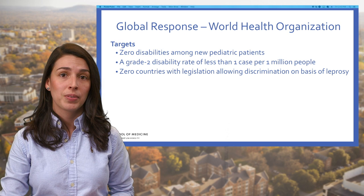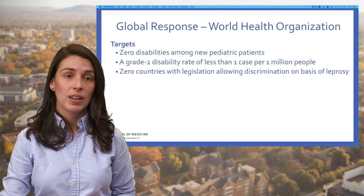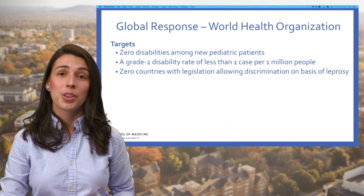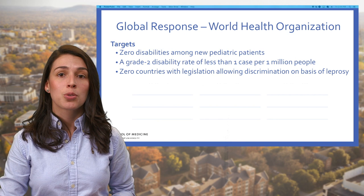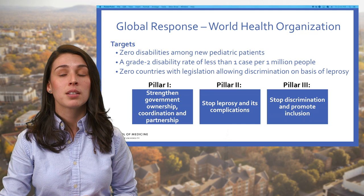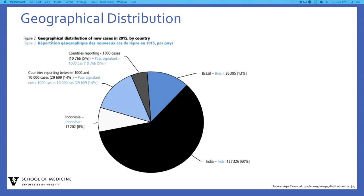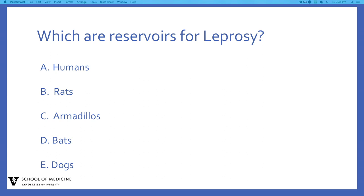In 2016 the World Health Organization launched its global leprosy strategy, focusing on reinvigorating efforts for leprosy control. Targets include zero disability among new pediatric patients, a grade-two disability rate of less than one case per one million, and zero countries with legislation allowing discrimination on the basis of leprosy. The strategy is structured around three core pillars: strengthening government ownership, coordination, and partnership; stopping leprosy and its complications; and stopping discrimination and promoting inclusion. Globally, incidence has fallen by 70% and prevalence by 90% since 2000, thanks to aggressive eradication efforts with multi-drug therapy regimens.